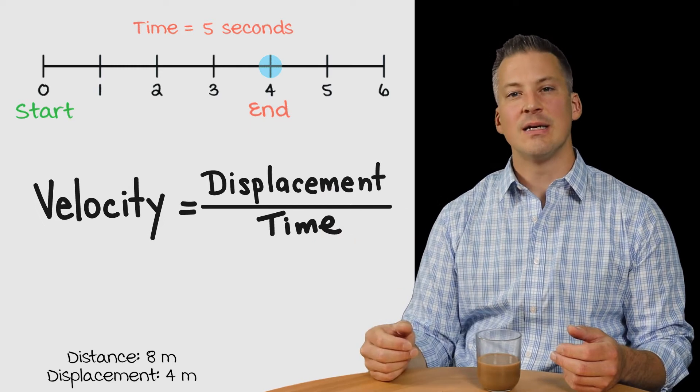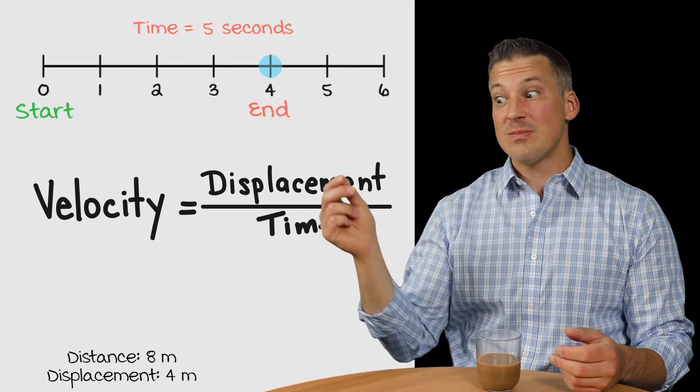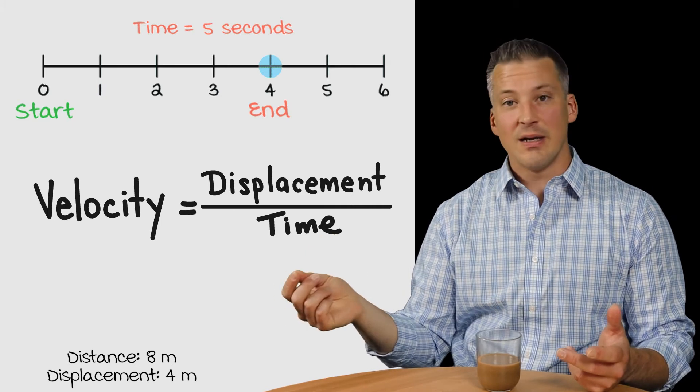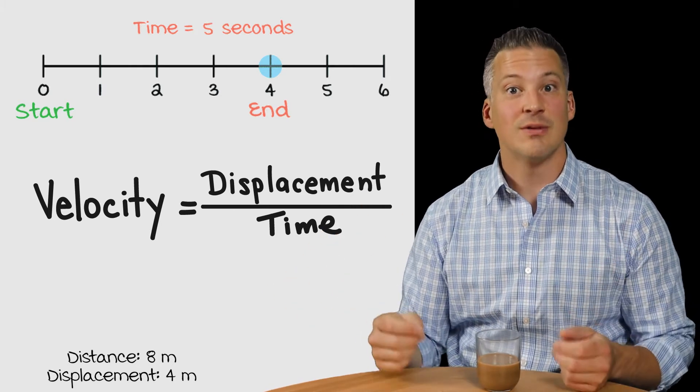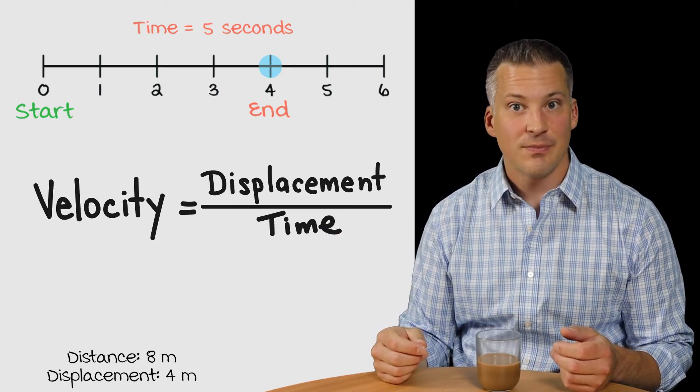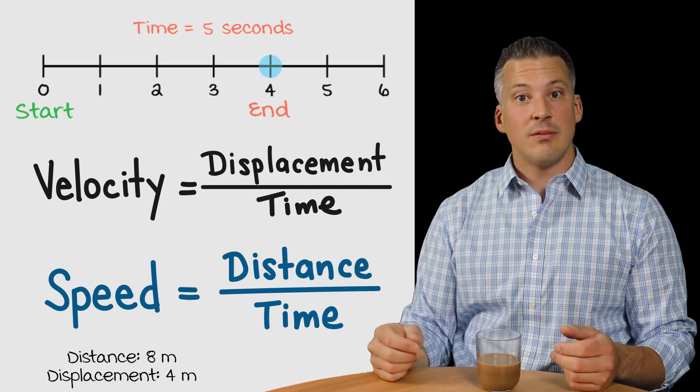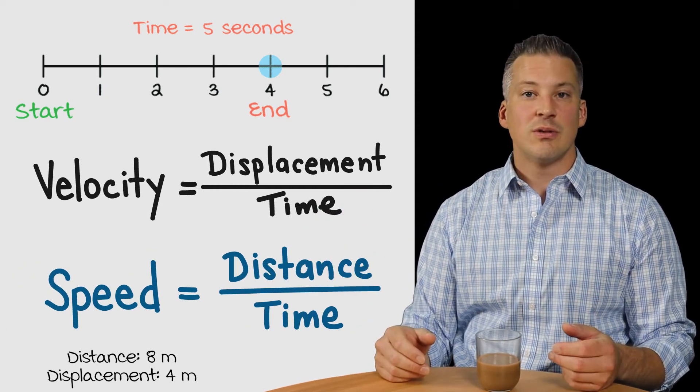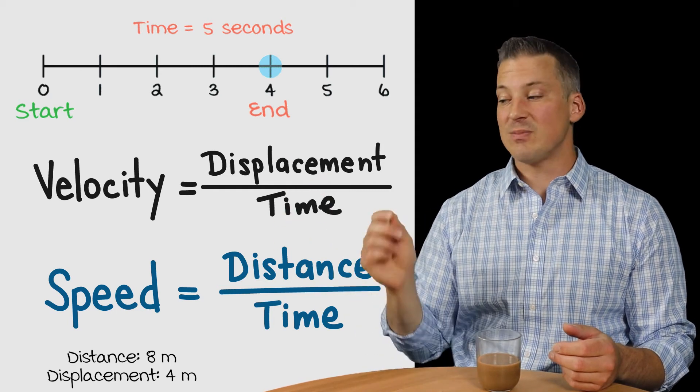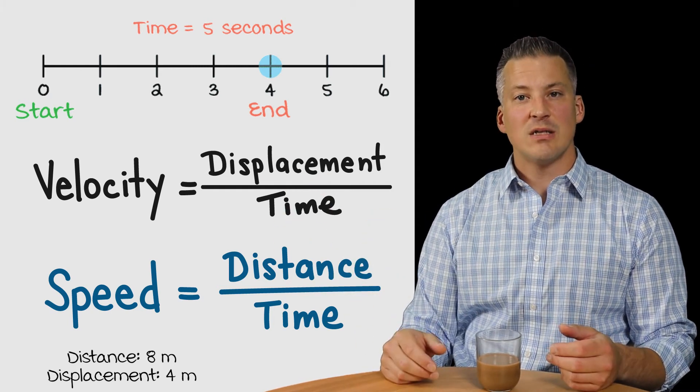Velocity, on the other hand, is going to be the displacement the object covered divided by the time over which it took the object to cover that displacement. So, we have our two formulas. Now, do we know those variables, meaning distance and time, or displacement and time, in order to solve for the speed and velocity?